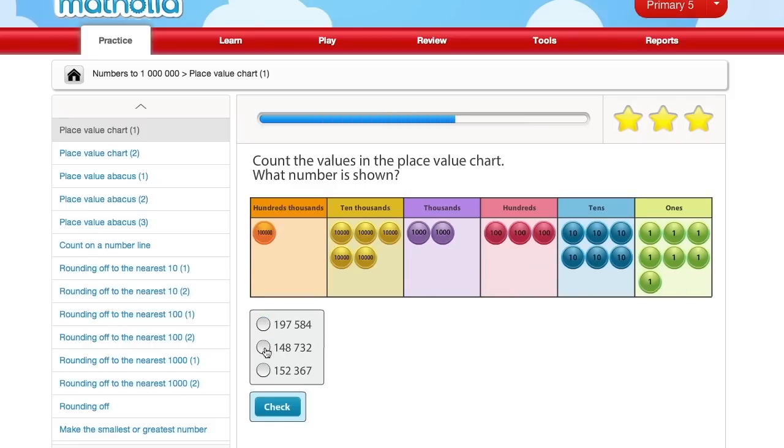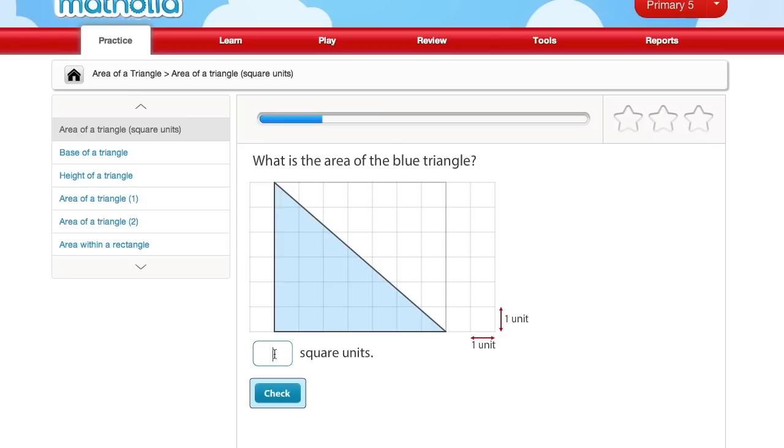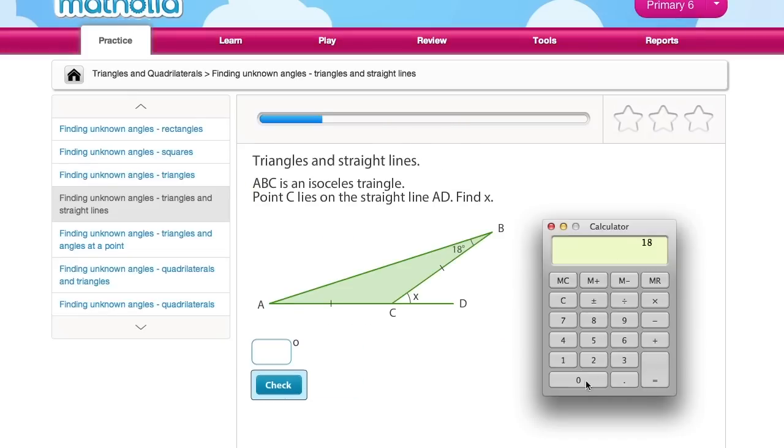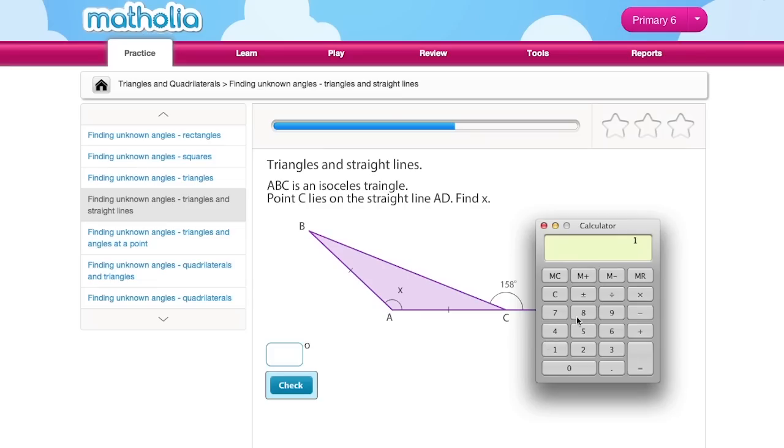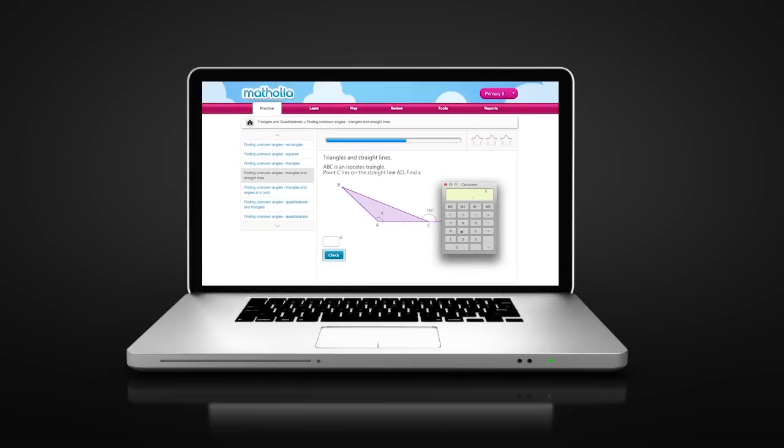There are over 1,500 practice modules on the Matholia portal, covering all syllabus topics from primary 1 to primary 6.